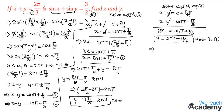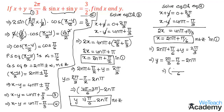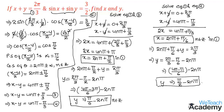Substituting x equal to 2nπ plus π/6 into equation 1, we get 2nπ plus π/6 plus y equal to 2π/3. Transferring all terms to the right-hand side gives y equal to 2π/3 minus π/6 minus 2nπ. With common denominator 6, the numerator becomes 4π minus π, giving y equal to 3π/6, which is π/2 minus 2nπ, where n belongs to integers.